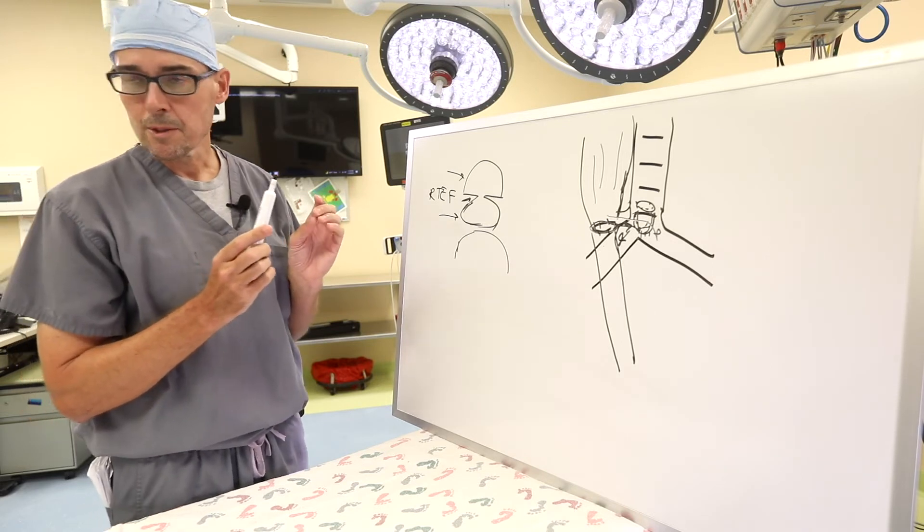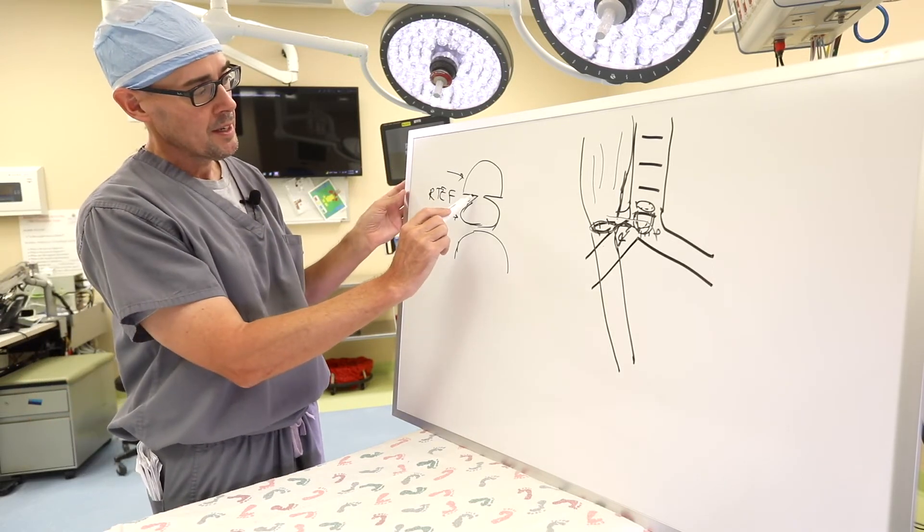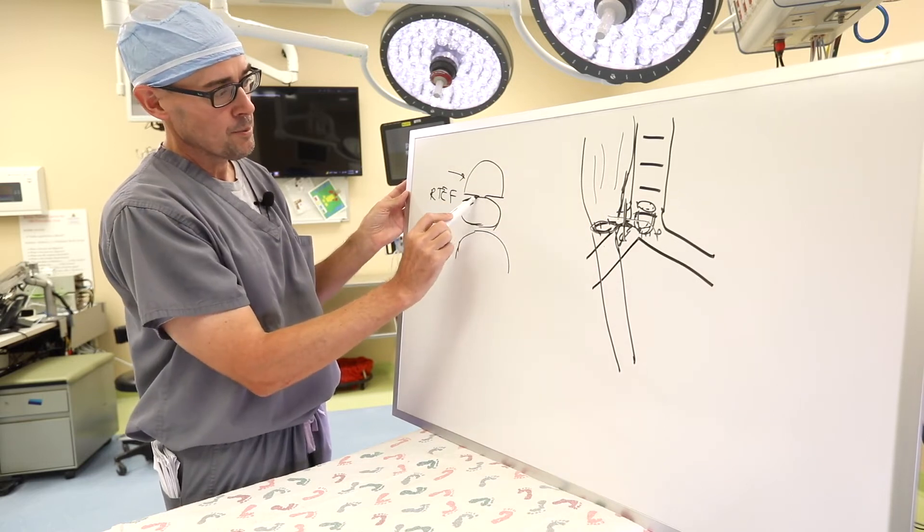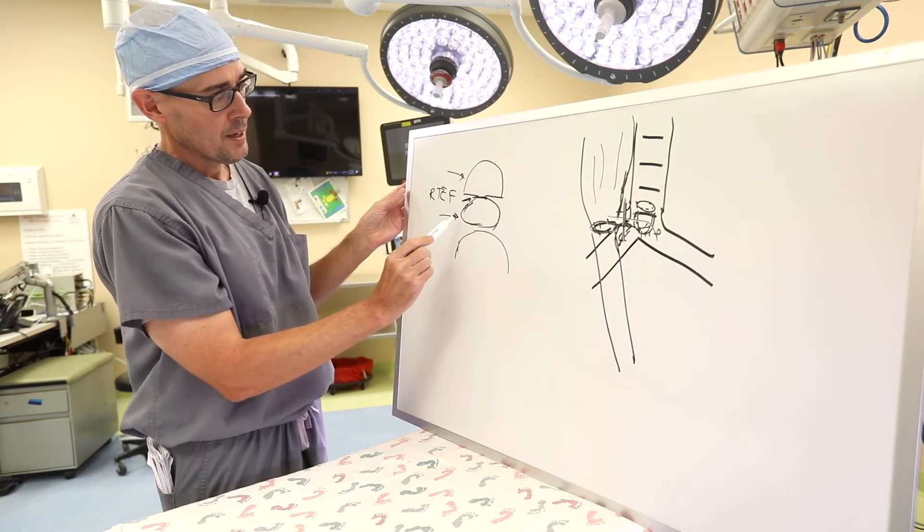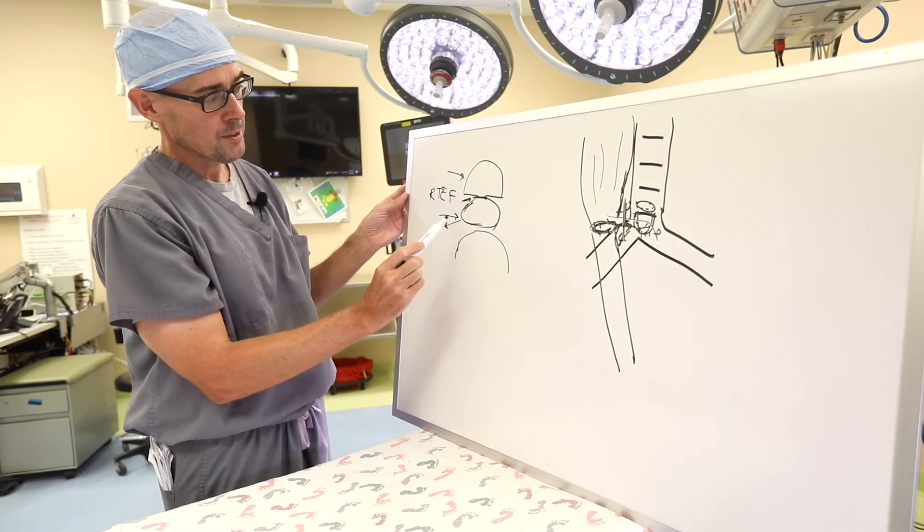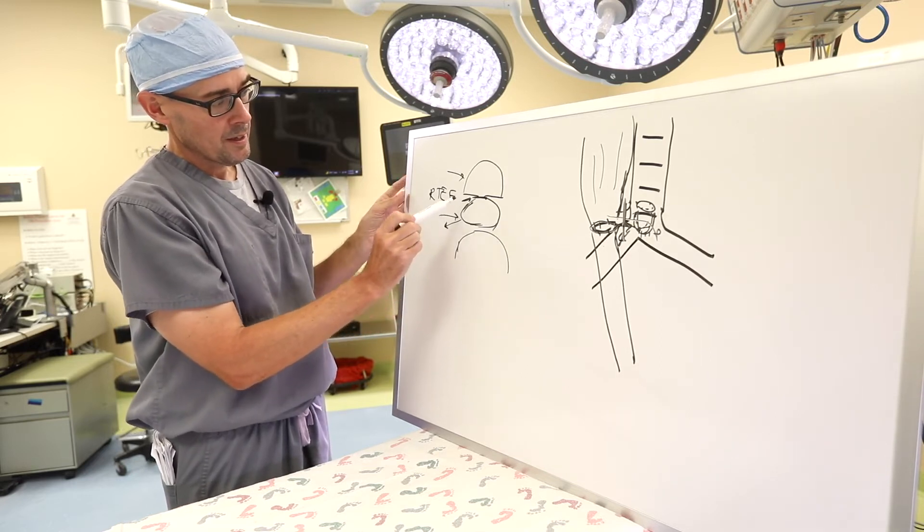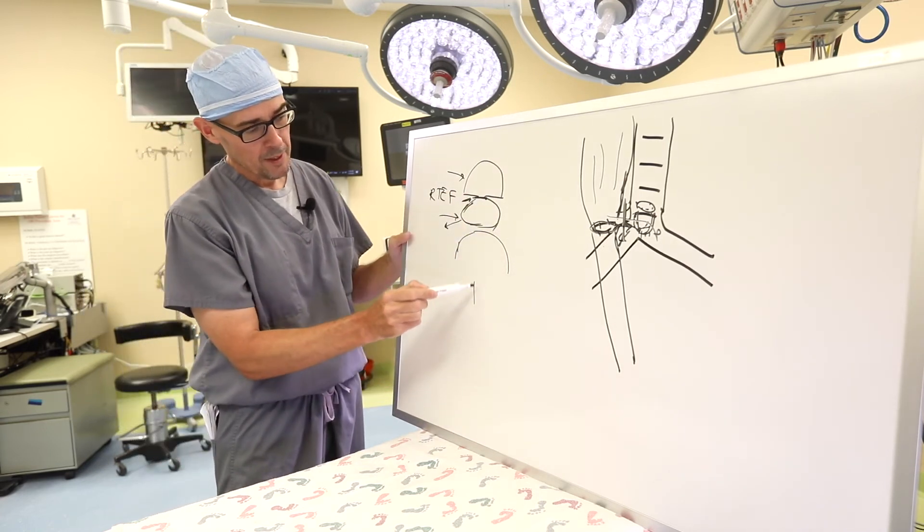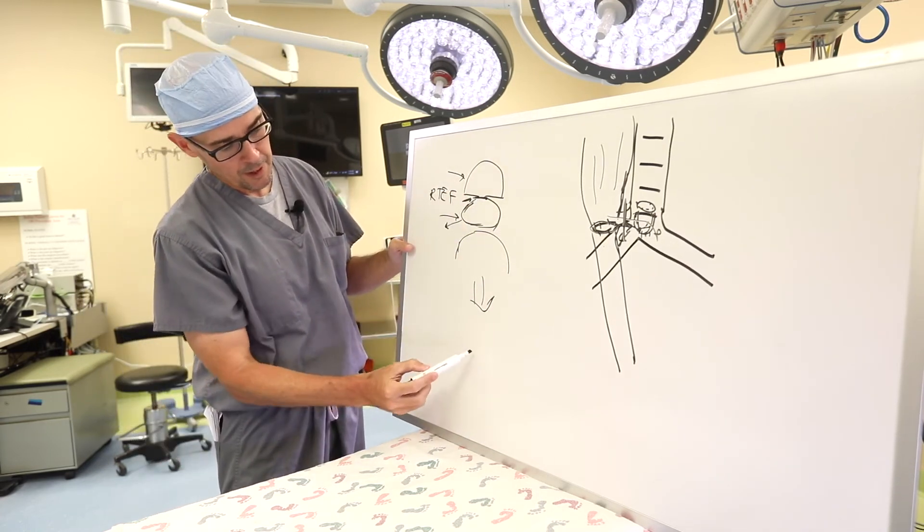The technique that we were able to develop to repair these is once you separate this again, or separate that here, is we now move the esophagus off to the side and pull the trachea back to the spine. So then that turns into looking like this.